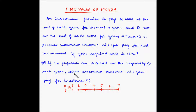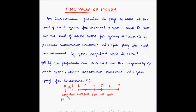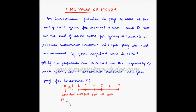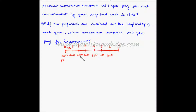Part B says that if the payments are received at the beginning of each year, what maximum amount will you pay for the investment? At the beginning of the first year we receive ₹2,000, at the beginning of the second year ₹2,000, the third year ₹2,000, then ₹1,000 at the beginning of years 4, 5, 6, and 7. We have to find the present value so that, when invested at 13% per annum, it allows us to withdraw this series of cash flows.